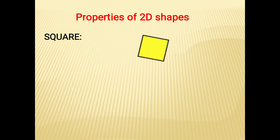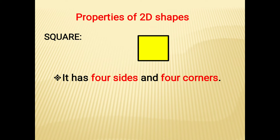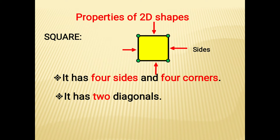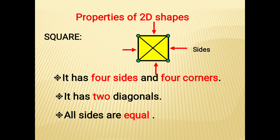Now let's see the properties of 2D shapes. The first shape is the square. This is a square. It has four sides and four corners. A square also has two diagonals, and all four sides are equal in length.